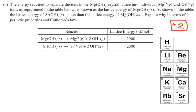Now part B, the energy required to separate the ions in the magnesium hydroxide crystal lattice into individual magnesiums and hydroxide ions, as represented in the table below, is known as the lattice energy. So they're defining lattice energy. Lattice energy of magnesium hydroxide. As shown in the table, the lattice energy of strontium hydroxide is less than the lattice energy of magnesium hydroxide. Explain why in terms of periodic properties and Coulomb's law.